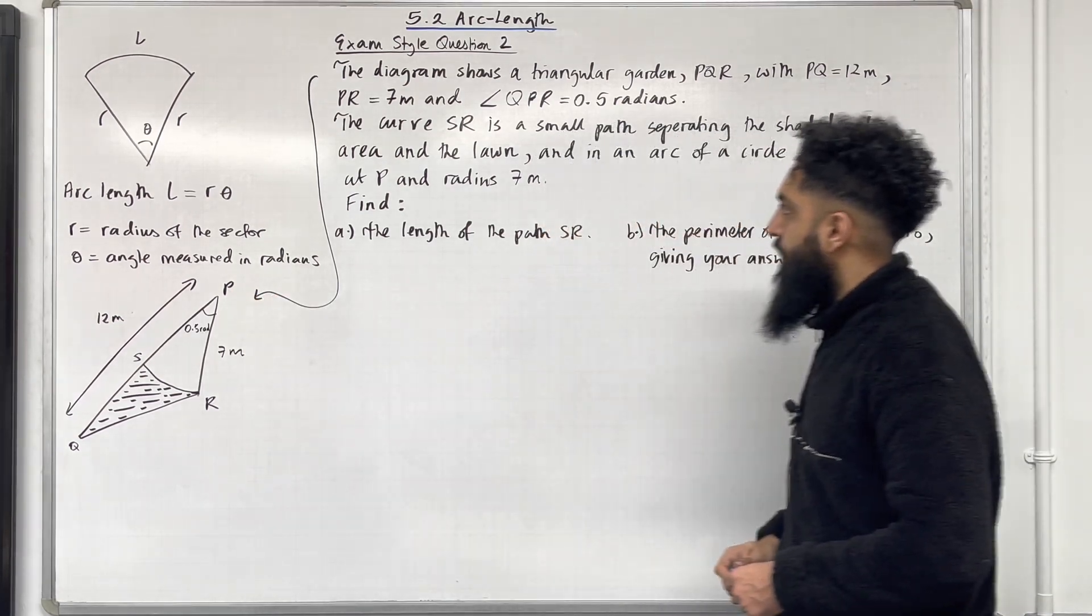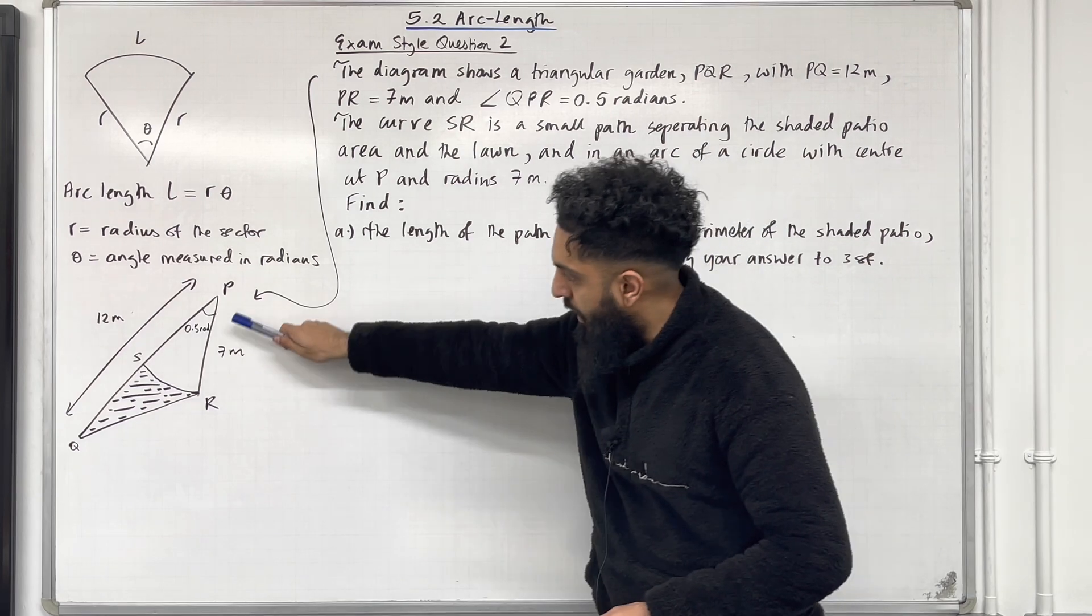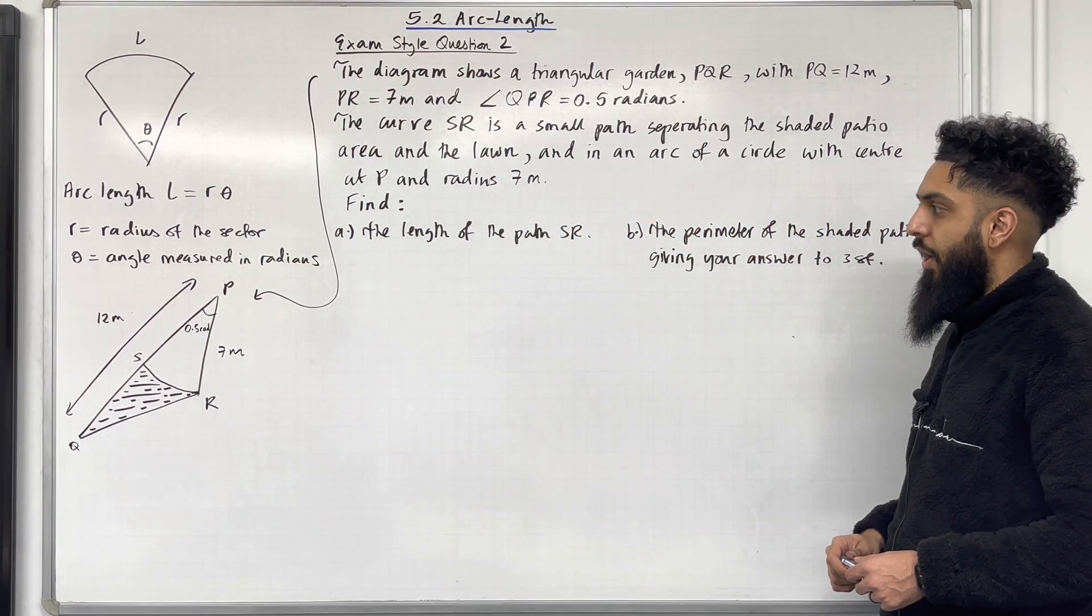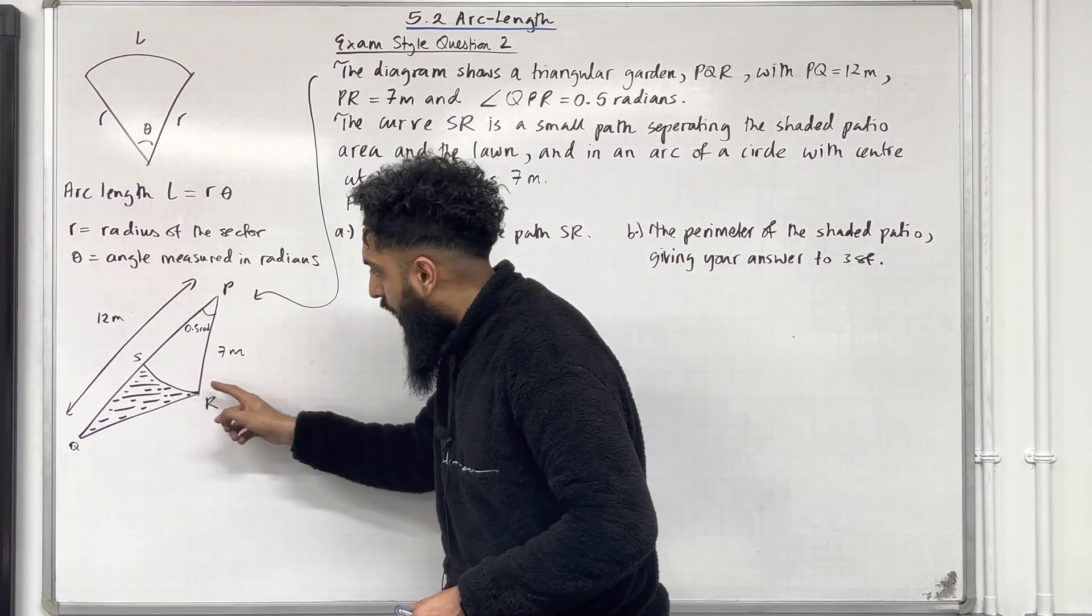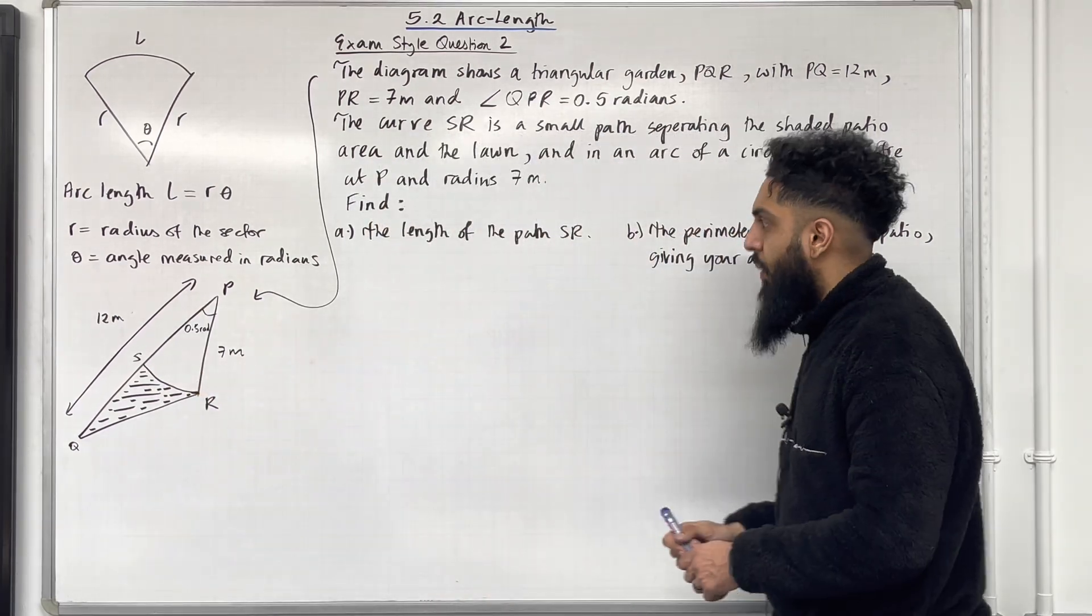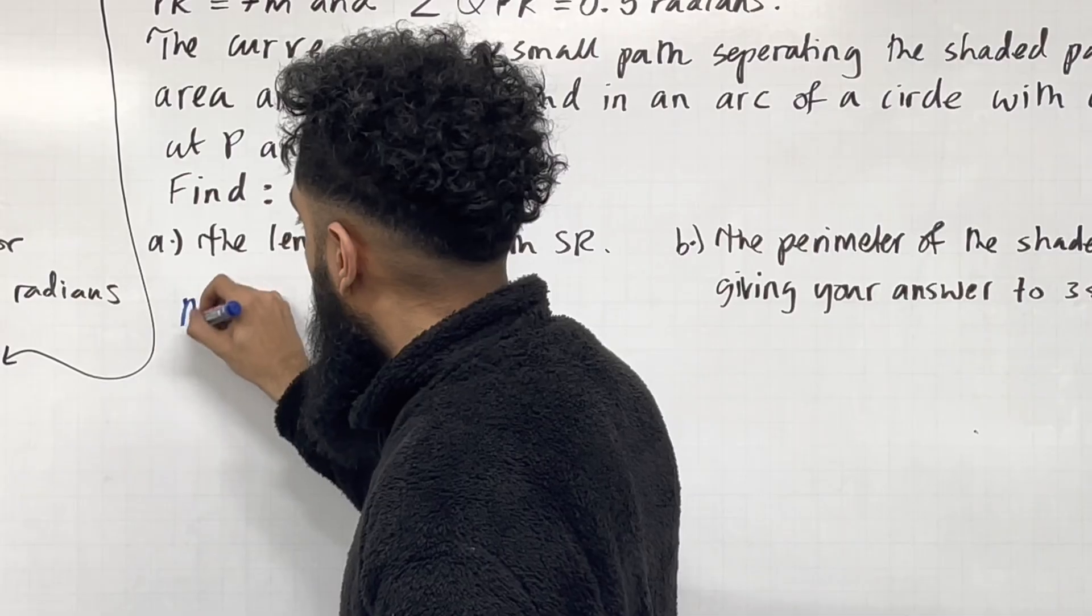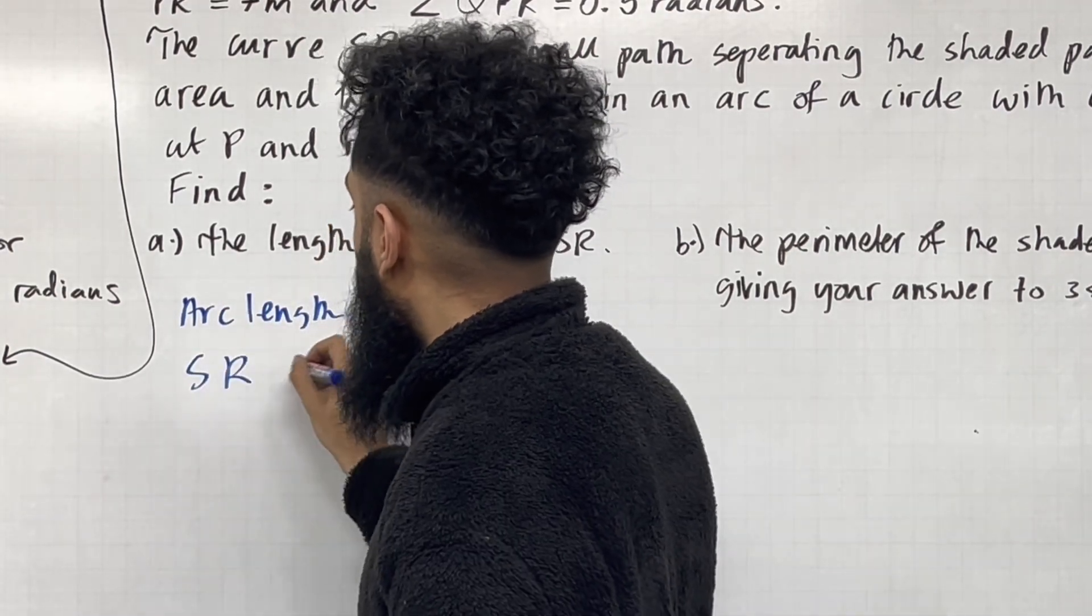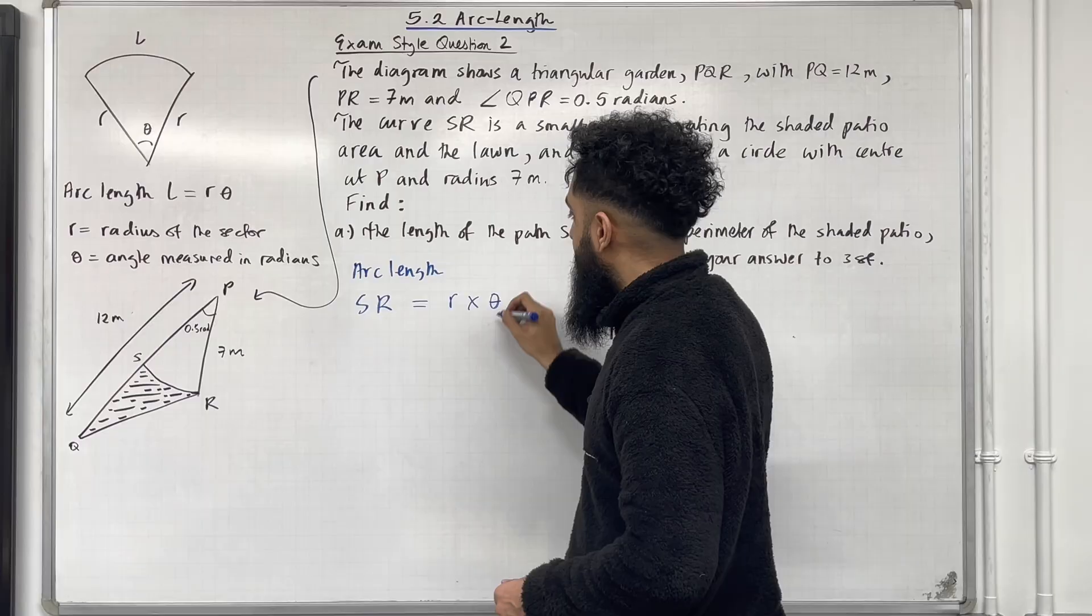There's a centre and radius 7 metre as stated. Find part A the length of the path SR. So that path SR is just an arc length SR. We're trying to calculate arc length SR. This is given by R multiplied by theta.